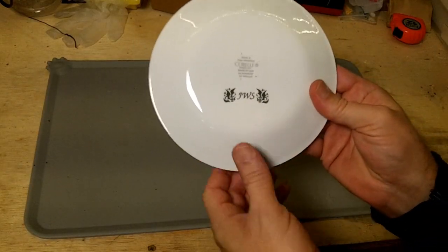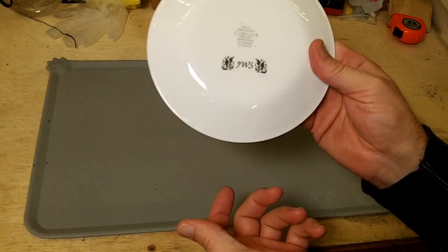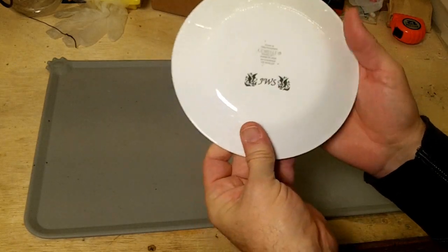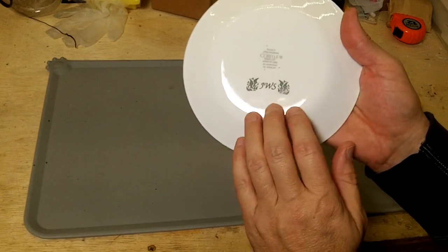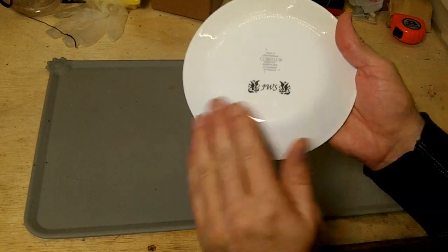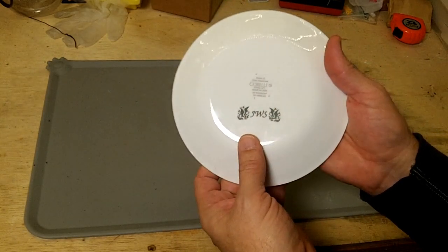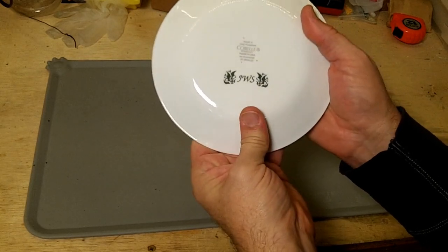Alright, that survived a trip through the dishwasher just fine. I can't guarantee it'll do a hundred trips through the dishwasher, but it seems to be dishwasher safe at least on the first attempt. So it shows up very nicely on this white plate. I think this is a material you're going to have to play with, get the power settings right, figure out what substrates work really well with it, but it definitely has a place in your arsenal if you have a laser engraver.